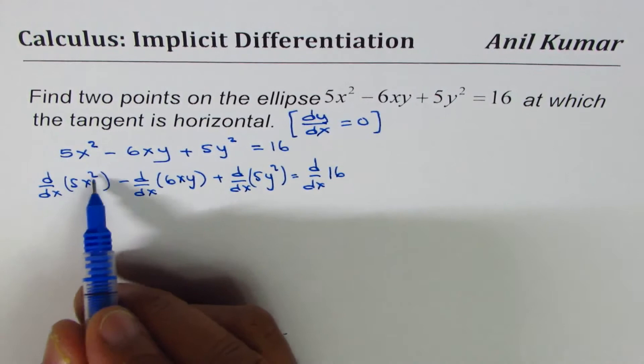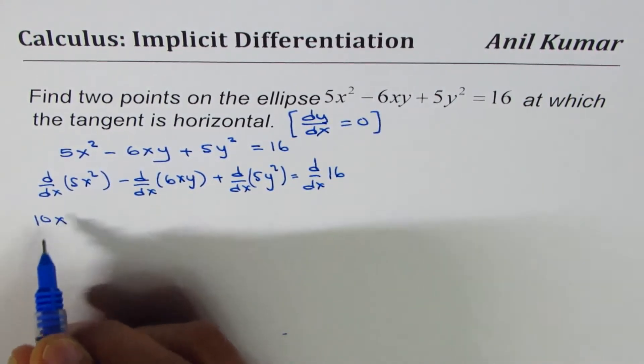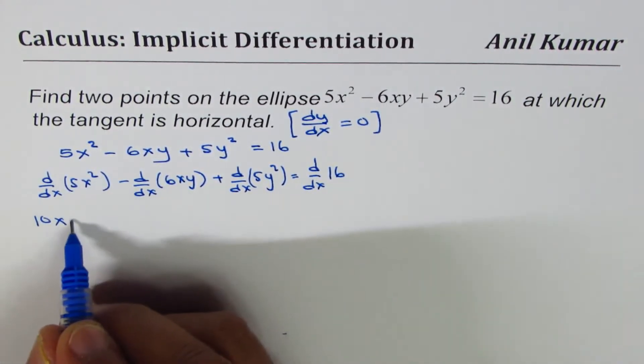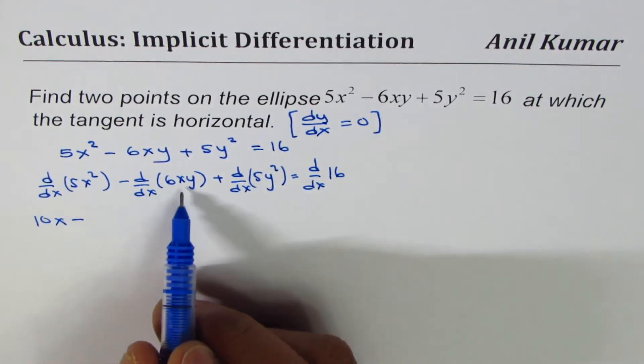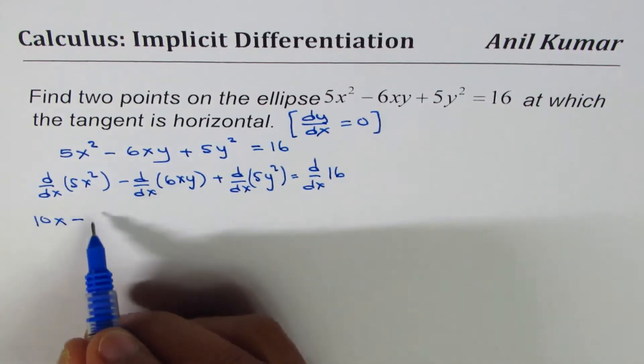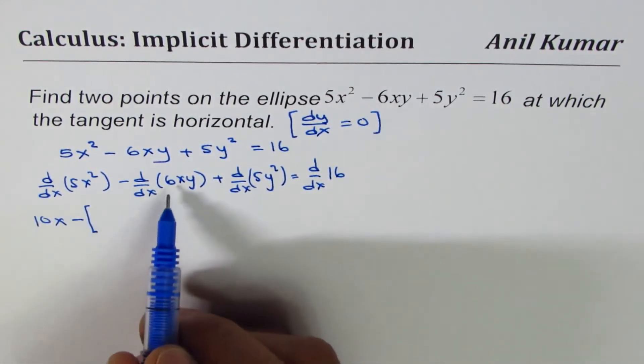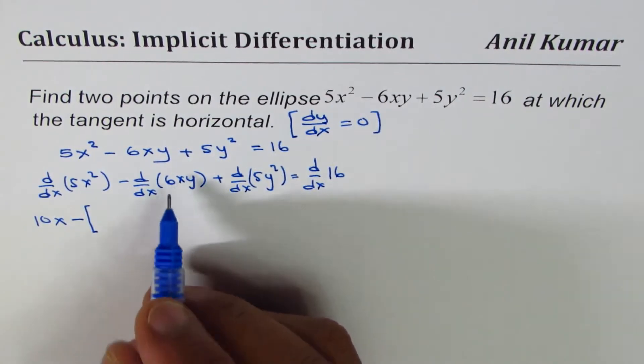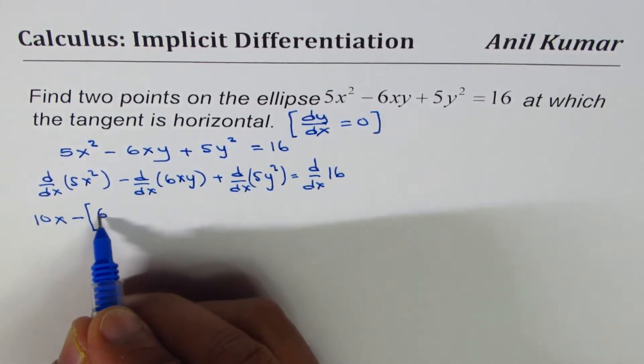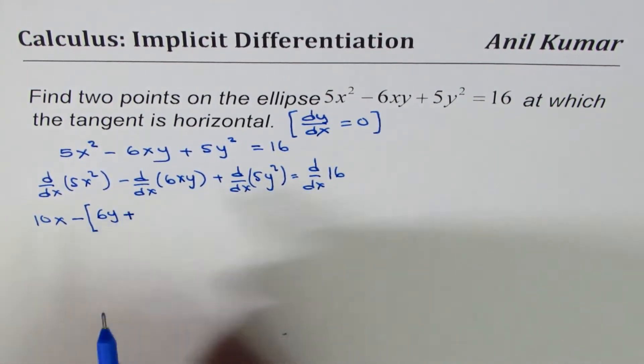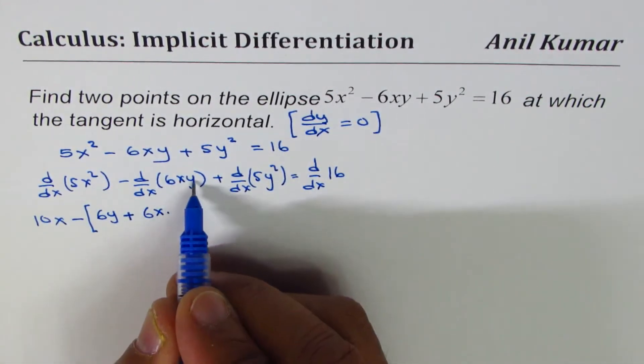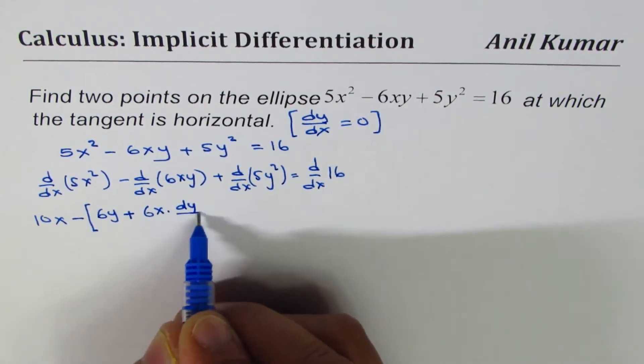Now here we get 10x, derivative of 5x² minus - now the derivative of xy, so we have to apply the product rule. So let me write it in brackets, minus outside, derivative of 6x is 6, so we get 6y plus 6x times derivative of y, which is dy/dx.